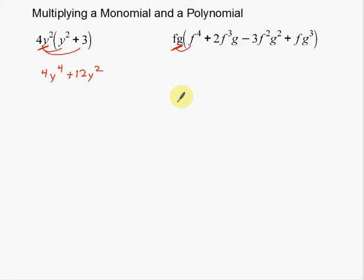So my first multiplication: fg times f⁴. We just concentrate on the f's here because there's no g's. So f to the first times f to the fourth is going to be f⁵. Add those exponents together. There is a 1 here. Just like the g, there is a 1 there. We usually don't write it. So f⁵ and then g to the first. I'm just going to write that as g. So there's my first multiplication.